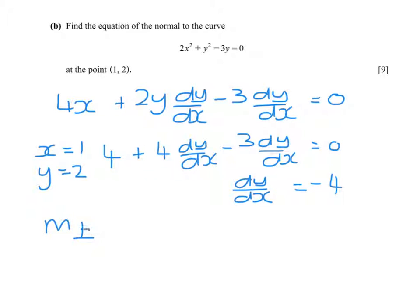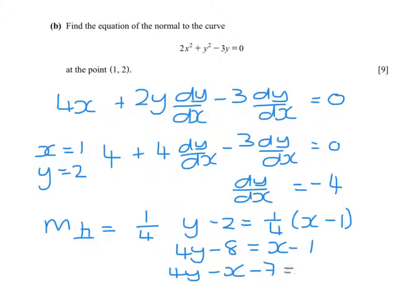So the gradient of the perpendicular is the negative reciprocal, so minus 4 becomes plus 1 quarter. We have y minus y1 equals m times x minus x1. I'm going to multiply everything by 4, which gives 4y minus x minus 7 equals 0.